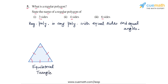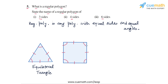Now a regular polygon of four sides will look like this. This will actually be a square, because a square has all four sides equal and all four angles equal — each angle of a square is equal to 90 degrees. So a regular polygon of four sides is a square.